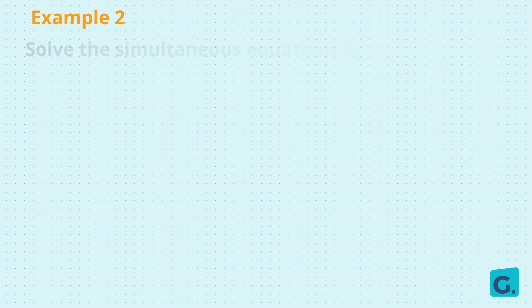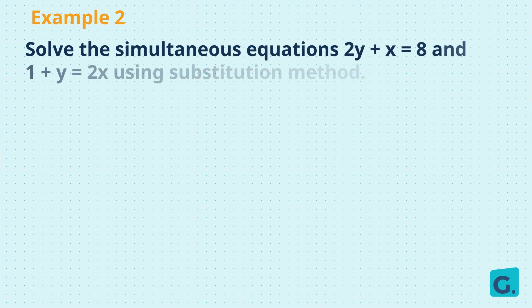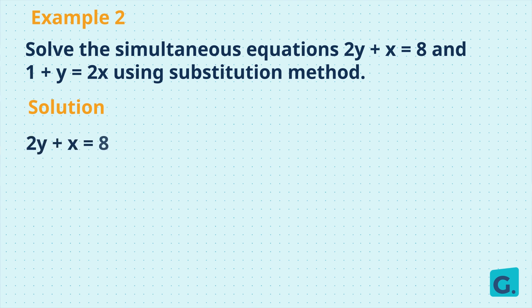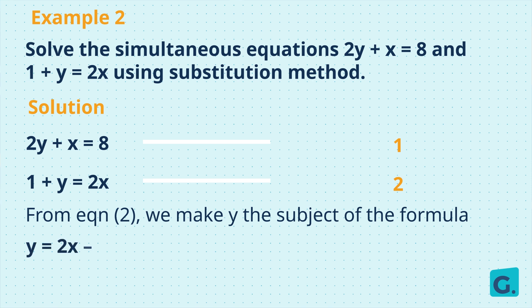Let's try one more example. Solve the simultaneous equations: 2y plus x equals 8, and 1 plus y equals 2x, using the substitution method. Remember, first we number our equations. Let 2y plus x equals 8 be equation 1, and let 1 plus y equals 2x be equation 2. From equation 2, we can make y the subject of the formula, so y equals 2x minus 1, and we name that equation 3.